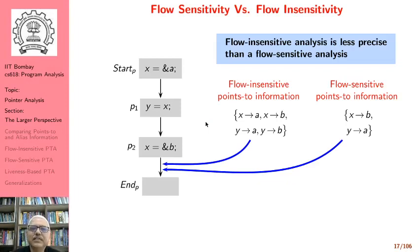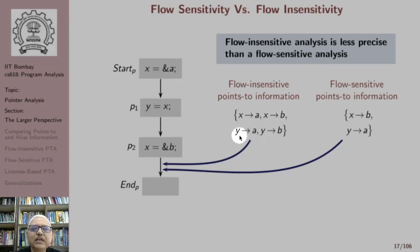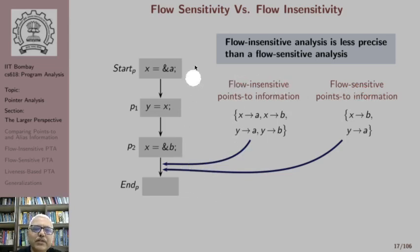Flow-insensitive analysis is less precise than flow-sensitive analysis. For example, suppose we have: x = &A, then y = x, then x = &B. A flow-insensitive points-to analysis will say x points to A, x points to B, y points to A, and y points to B. Note that there is no chance of y actually pointing to B, because the assignment x = &B happens after y = x. A flow-sensitive analysis will correctly tell us that at that program point x points to B and y points to A.